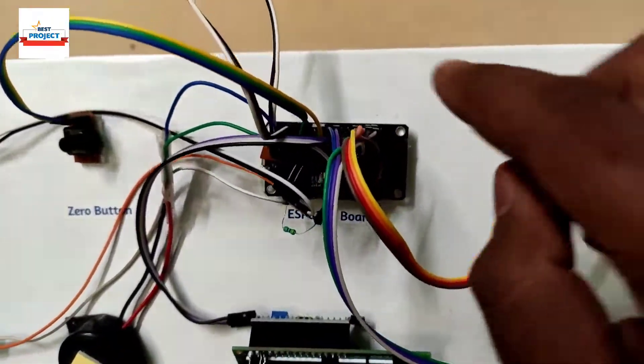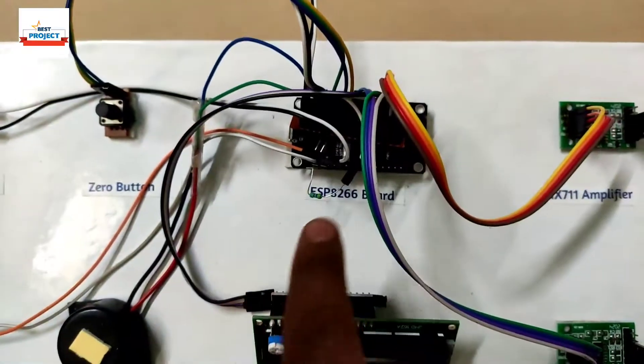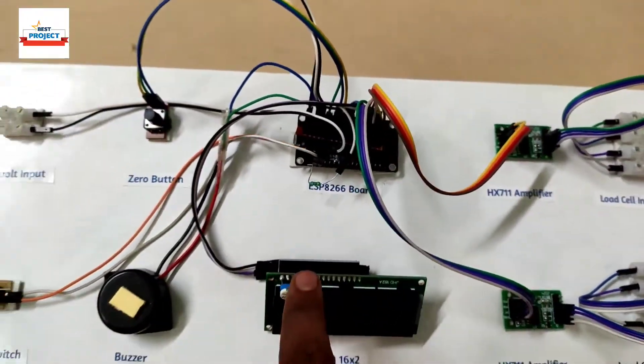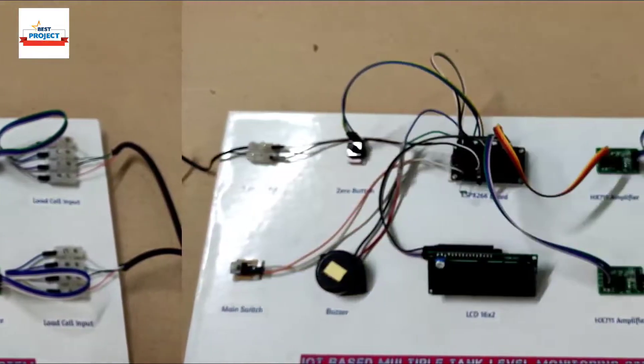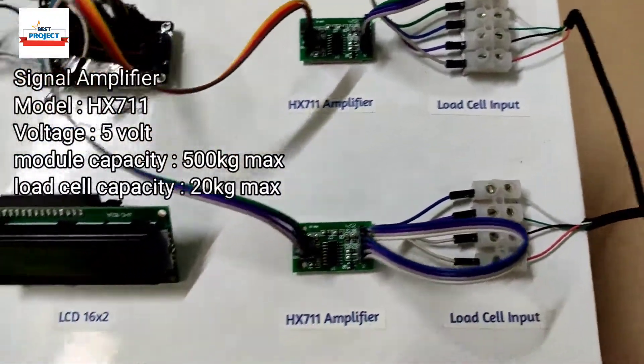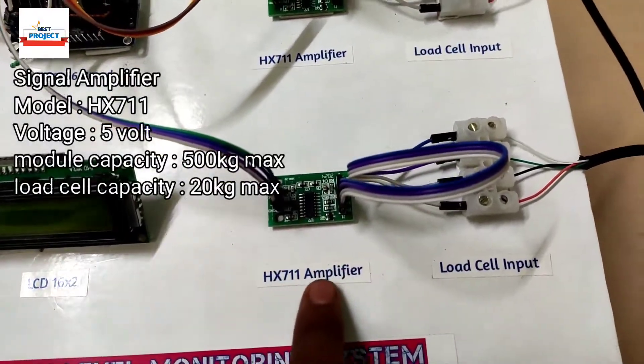The next component is the brain of the system, a NodeMCU ESP8266. It's responsible to handle the entire operation of this model, handling the Wi-Fi credentials, turning the sensors, LCD, and everything else. The next component is a signal amplifier.